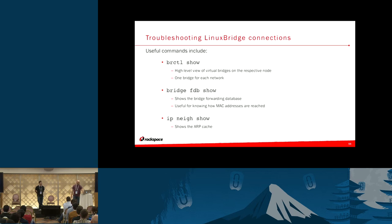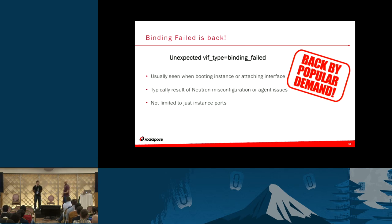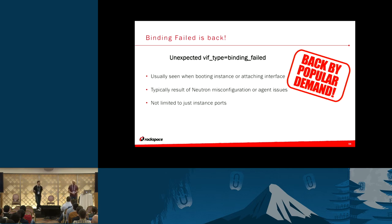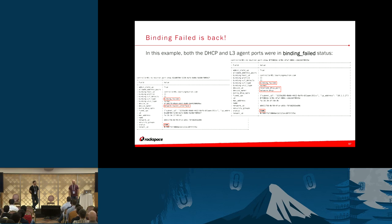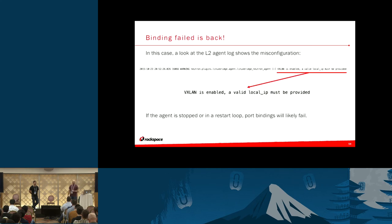Back to VIF type binding failed — we saw this error in the Nova example. You usually see this when you're booting an instance or attaching an interface, and it's typically the result of a Neutron misconfiguration or an agent issue — not just limited to instance ports. Here we have a DHCP port and an L3 router port that are both in a binding failed status. A tenant created a network, enabled DHCP on a subnet, and attached that network to a router. Their instance couldn't get an IP, and when they assigned an IP manually via the console, they were unable to hit the gateway.